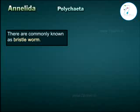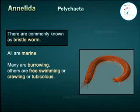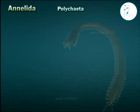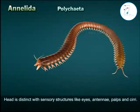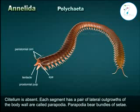Class 1 - Polychaeta: commonly known as bristle worms. All are marine; many are burrowing, others are free-swimming, crawling, or tubiculous. The head is distinct with sensory structures like eyes, antennae, palps, and cirri. Clitellum is absent. Each segment has a pair of lateral outgrowths of the body wall called parapodia.